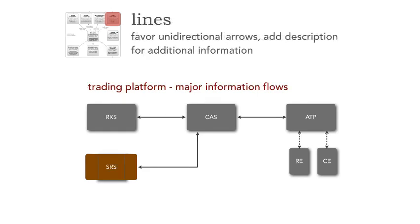Now we have a problem with this architecture because we've got all these lines. It's easy to just put a double-arrowed line, but favor unidirectional lines over those. If these are the major information flows, a bidirectional diagram gives me no information whatsoever. One simple change to single unidirectional arrows, and now we can see the major information flows — information flows from the RKS system into the CAS, and from SRS into the CAS, and then correspondingly to the ATP.